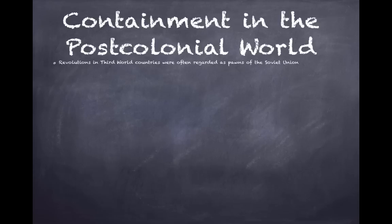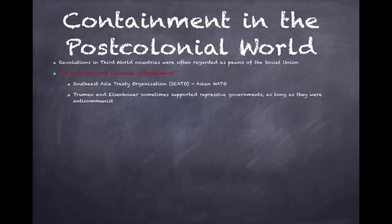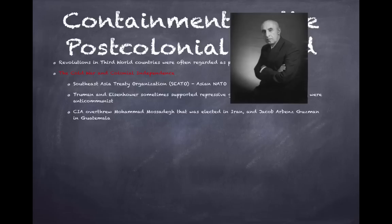Third world countries were often seen as pawns of the Soviet Union, and the US feared they might align with the Soviets. The US established SEATO — the Southeast Asia Treaty Organization — basically a NATO for Asia. Truman and Eisenhower sometimes supported repressive governments as long as they were anti-communist. The CIA overthrew Iran's elected leader Mohammed Mosaddegh and installed the Shah of Iran, which later led to the Iranian Revolution of 1979. The CIA also helped overthrow Guatemala's Jacob Arbenz Guzman, who had nationalized foreign-owned land — called the Banana Wars because it involved the United Fruit Company.